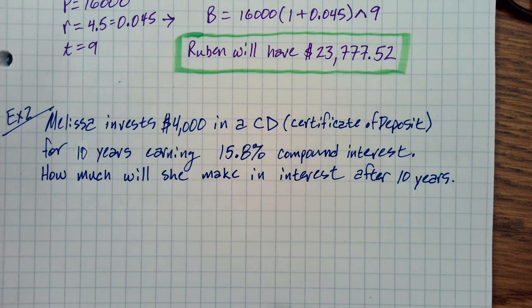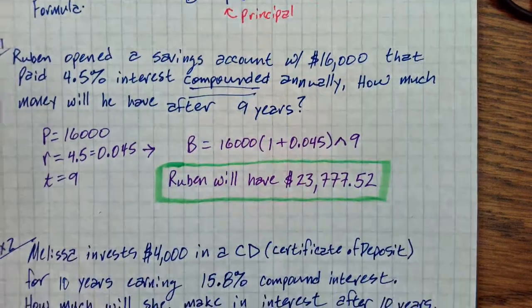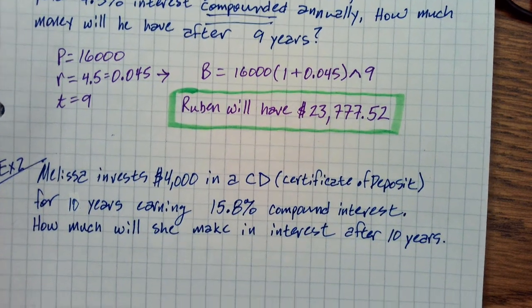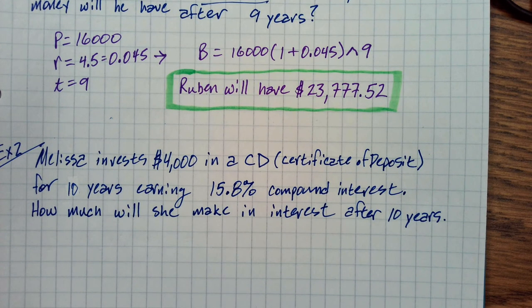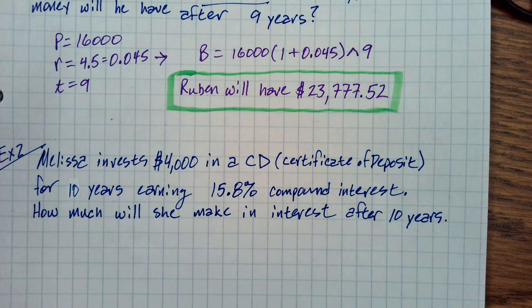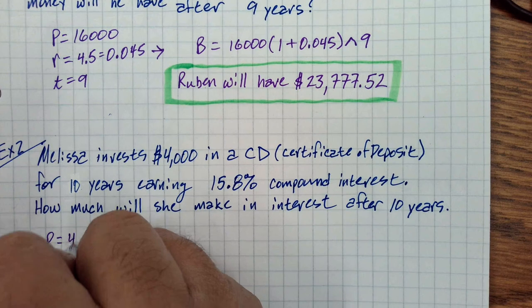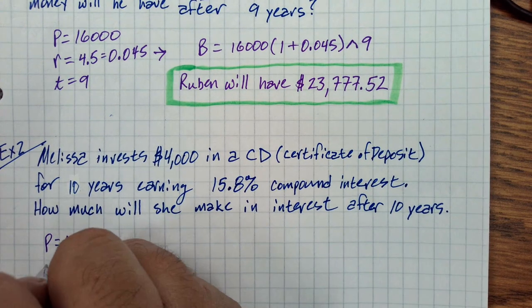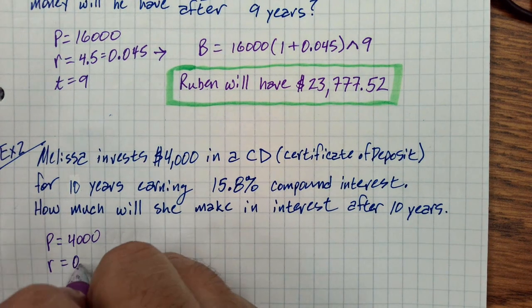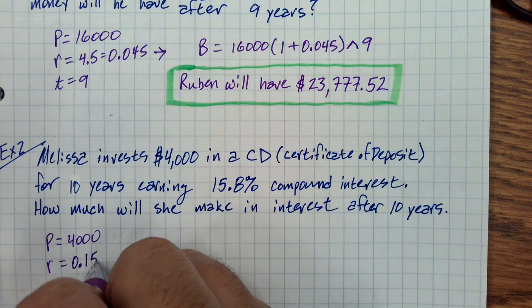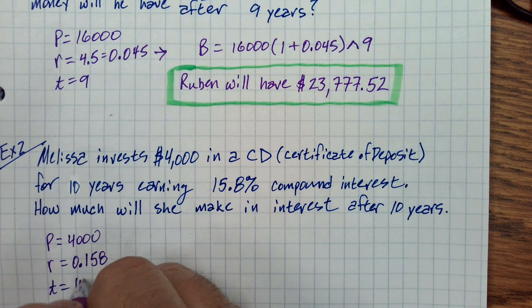We want to figure out this time how much interest. Will the formula we have be enough? Well, it'll tell us the balance, but the balance is going to help us figure out the interest. We're going to have to do a little subtraction at the end. So let's figure out the balance. We're going to need to figure out the principal, which is $4,000. We're going to have to figure out the rate, which is 15.8, so 0.158. We're going to need to know the time, which is 10 years.